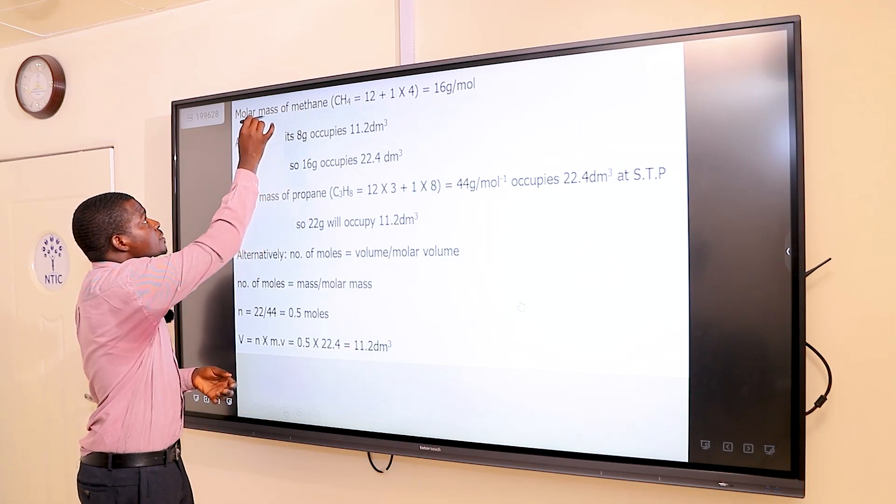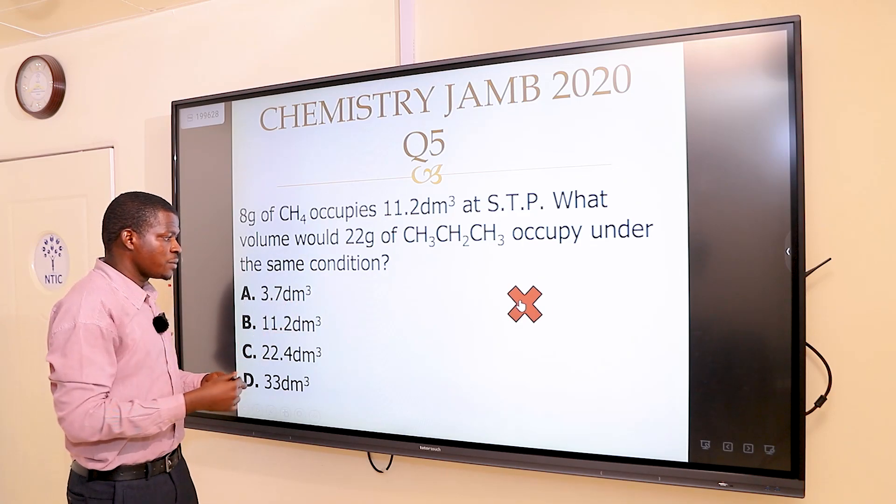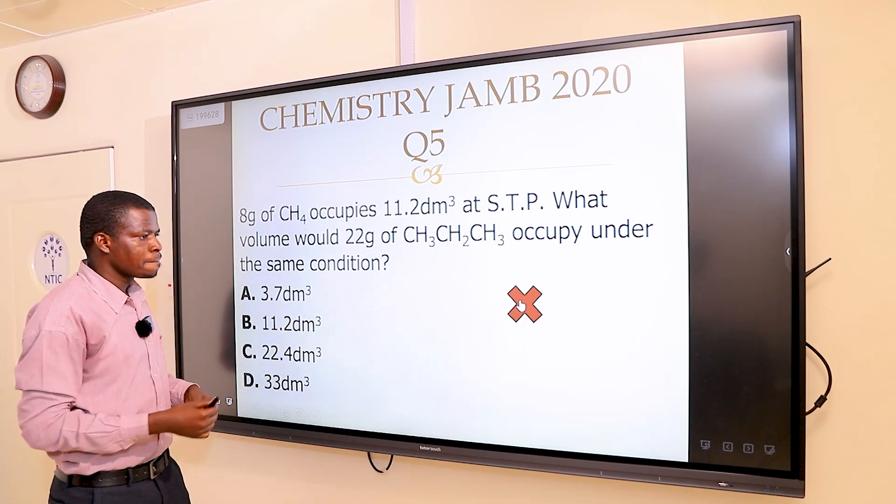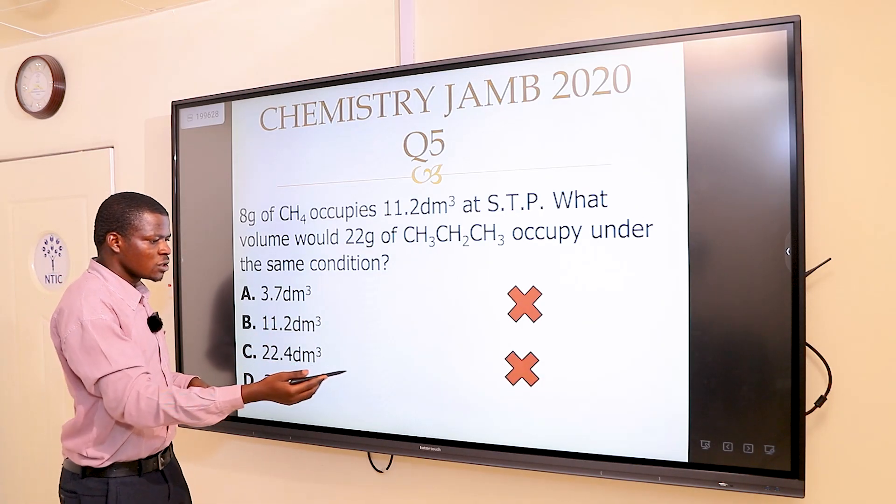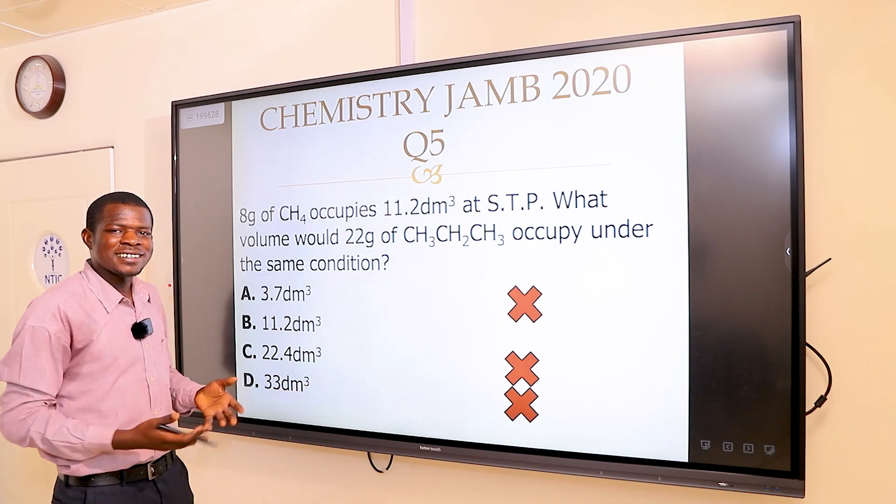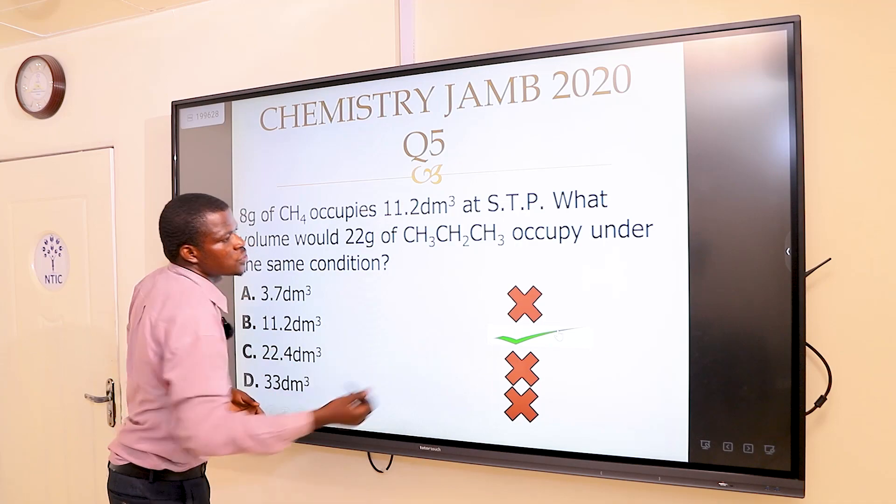We had 11.2 dm³. Option A is wrong, option C is also wrong, option D is also wrong, and the right answer must be option B.